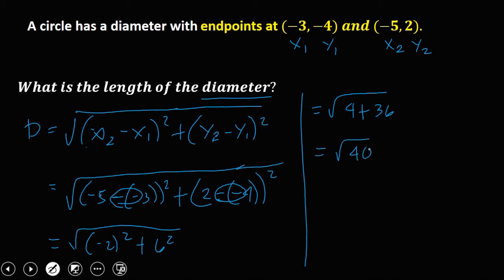Then we can simplify this one. So 40, that's 4 × 10, and the square root of 4 is 2, so the answer now is 2√10. So this is the length of the diameter.